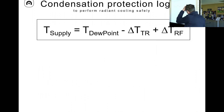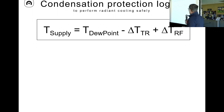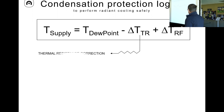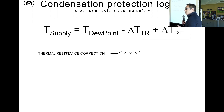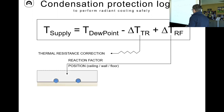Strategies for condensation protection are mandatory for radiant cooling, especially on the ceiling when you want to push performance. With a three-way valve, we adjust the supply temperature of our hydronic system. The temperature depends on the delta TR — the thermal resistance correction. The performance of a radiant cooling system really depends on the thermal mass. If this is our panel in the ceiling — the EPS, the pipes, the aluminum transfer plate, and the gypsum layer — and the dew point in the room is say 18°C.